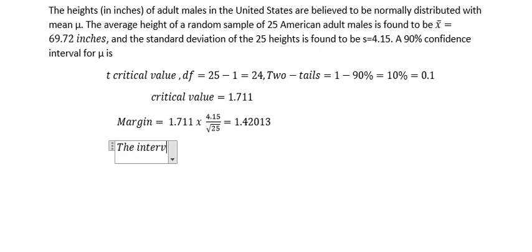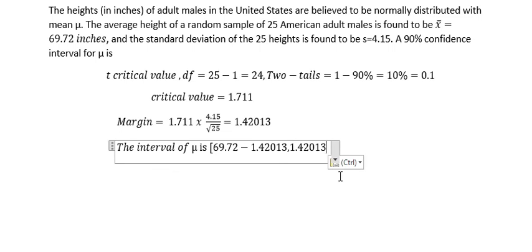The interval of mu is the mean, which is 69.72, minus the margin and the mean plus the margin in here. So we can find the interval, this is about 68.29987 to 71.14013.